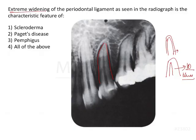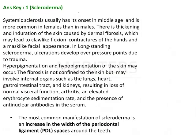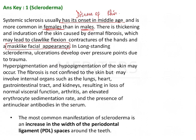The answer is scleroderma. Systemic scleroderma is basically a disease of the skin, with onset typically in middle age and more common in females than in males. There is thickening and induration of the skin caused by dermal fibrosis. An important feature is a mask-like facial appearance.